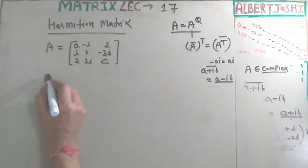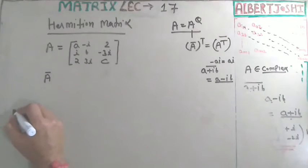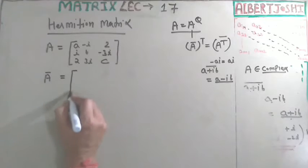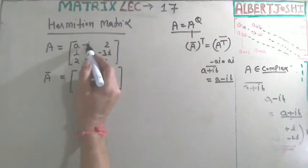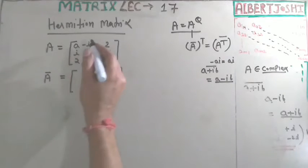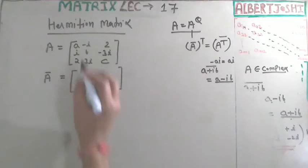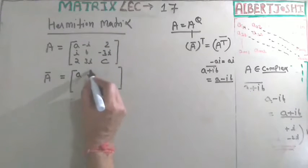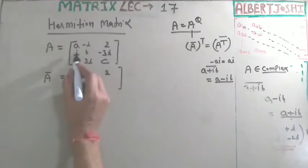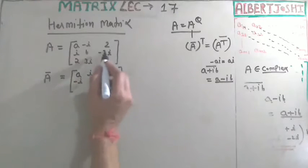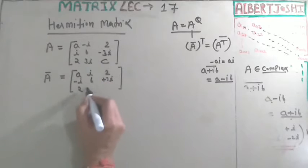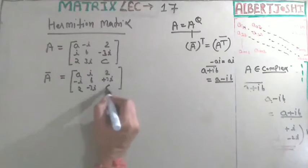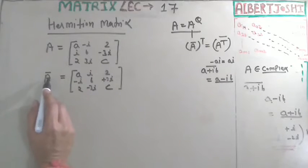Let us check. First, we take the conjugate — conjugate means the imaginary parts change sign, so negativity converts to positivity. The conjugate of the matrix gives entries: a, plus i, 2; minus i, b, plus 3i; 2, minus 3i, c.